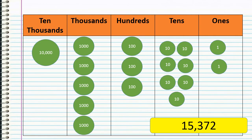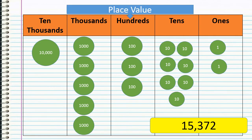Numbers are grouped into periods. The place value of a digit is its position in a number. We have ones, tens, hundreds, thousands, and ten thousands. Looking at our example, we have 15,372. 2 is found in the ones place. 7 is found in the tens place. 3 is found in the hundreds place. 5 is found in the thousands place. And 1 is found in the ten thousands place.